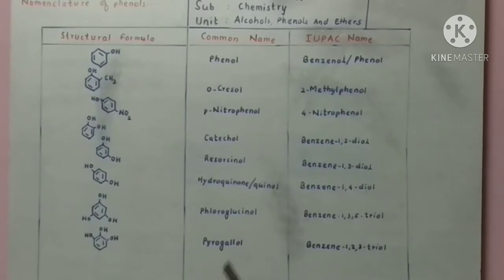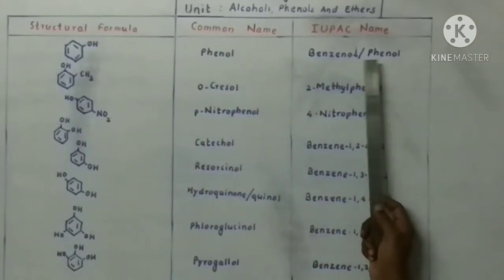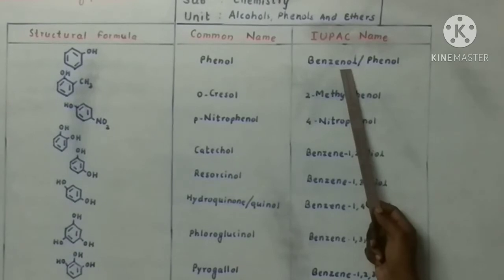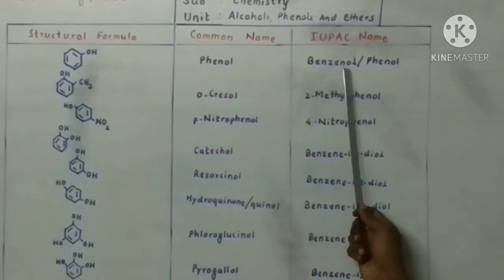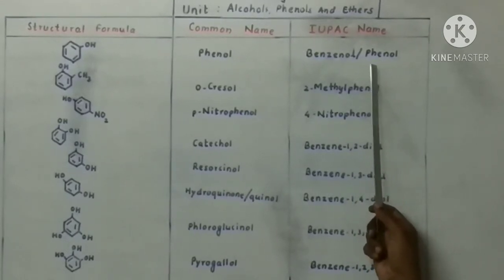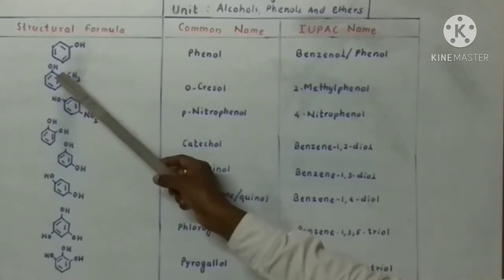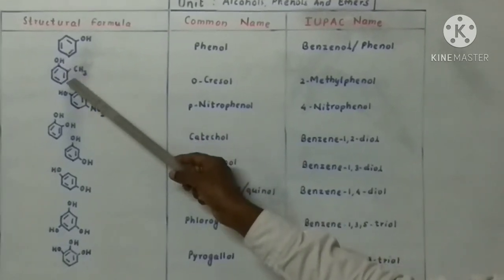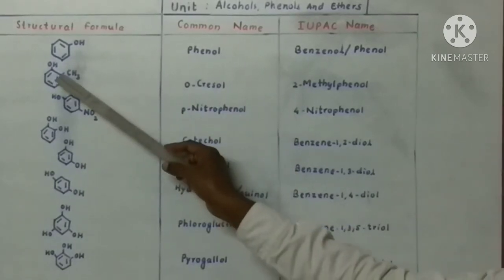Now we will study IUPAC names of these structures. Phenols are hydroxyl derivatives of benzene. The IUPAC name is benzenol or phenol — the terminal 'e' of benzene is replaced by 'ol'. The name phenol is accepted by IUPAC so we can use it easily. For the structure with a methyl group at the second carbon atom and OH at the first, we number accordingly: 1, 2 — so the IUPAC name is 2-methylphenol.